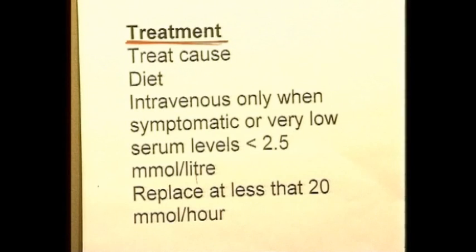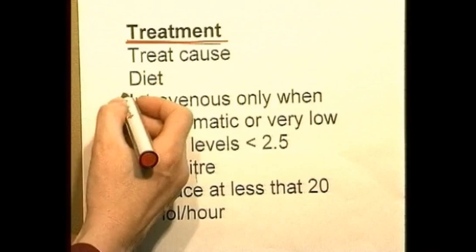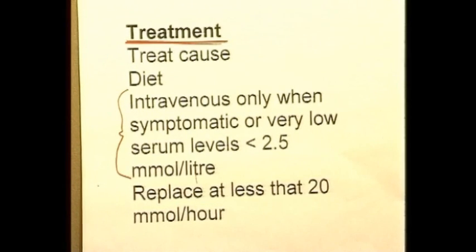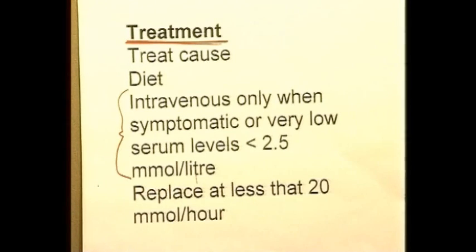Intravenous potassium should only be given under the direction of a physician experienced in these matters. Normally you'd only give IV potassium if there were symptoms like muscle weakness or abnormal heart rhythms, or if the serum potassium was less than 2.5 millimoles per litre. When replacing potassium it should not be given at a rate greater than 20 millimoles per hour unless a senior physician directs it, and even then the patient should be monitored with hourly potassium levels recorded.